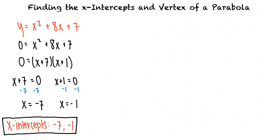This means that the parabola intersects the x-axis at the points negative 7 comma 0 and negative 1 comma 0. This means that the parabola must look like one of the following since it could open either up or down.